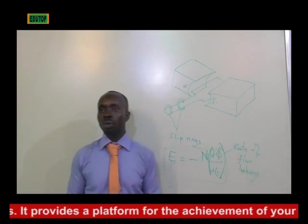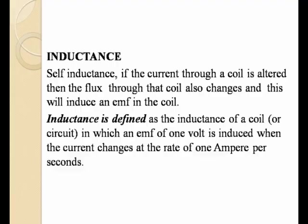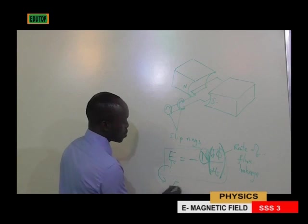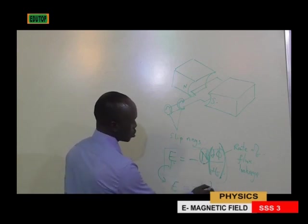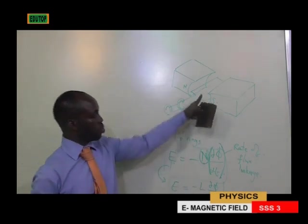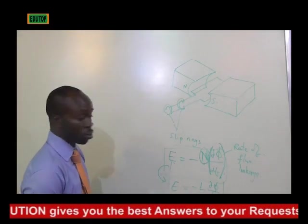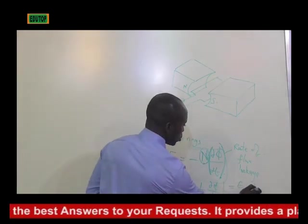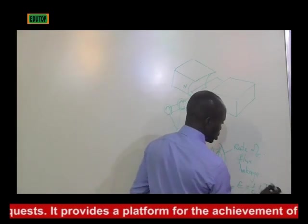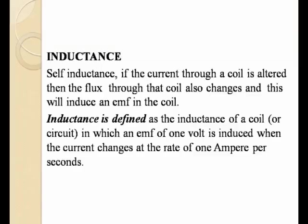Let's go to inductance. If the current through a coil is altered, then the flux through that coil will change, and this will induce an EMF in the coil. In an inductor, instead of N (number of turns), you use L: EMF = L dΦ/dt. The energy stored in an inductor is given by: Energy = ½LI².